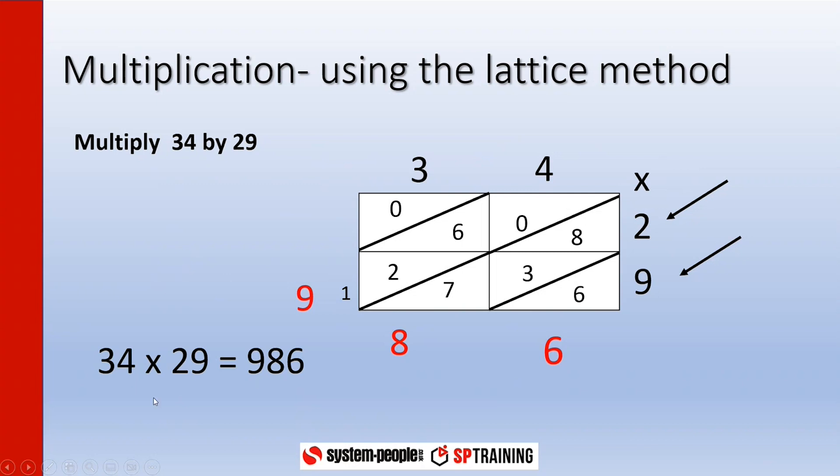And I come up with my answer exactly the same as the rest: 34 times 29 is 986.